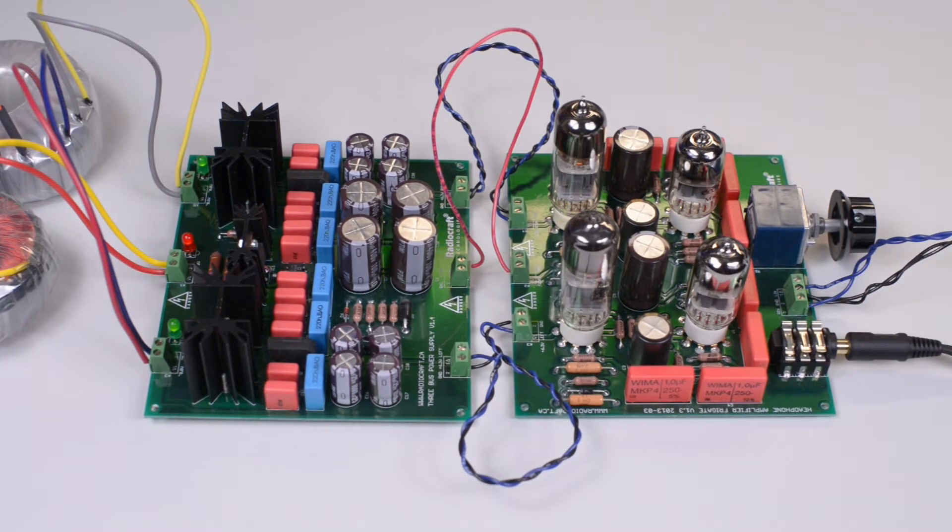Originally this kit was designed to be housed on one PC board, with both power supply unit and the amplifier. Subsequently we redesigned the kit and split the power supply unit and the amplifier. Today on the left you can see the PC board which houses the power supply, and on the right you see the PC board which houses the amplifier Frigate itself.